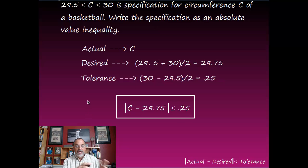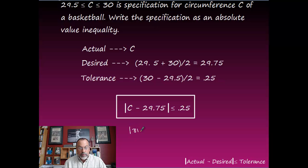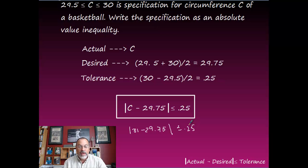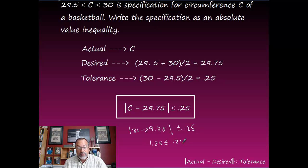We plug these values into the absolute value inequality: |C − 29.75| < 0.25. To check whether a basketball with circumference 31 is acceptable, we substitute: |31 − 29.75| = 1.25. Is 1.25 less than 0.25? No — so this basketball would be rejected because it's not within the specifications.